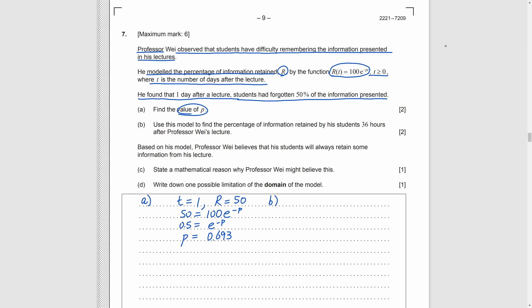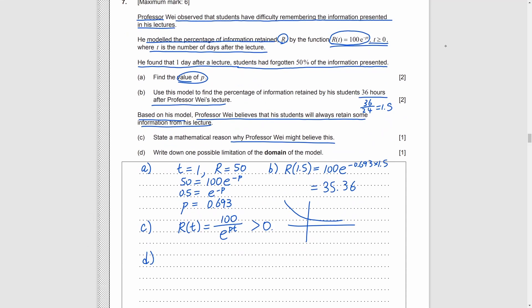Part B, we need to find the information retained after 36 hours. 36 is 1.5 days. So we just put 1.5 into t and calculate r and we get 35.36. Part C, the professor believes that there must be some information left whenever. And we need to explain that. Part D, it is because R(t) is an exponential function. And we need to remember that all the exponential functions are always positive. Part D, we need to write down the limitation of the domain of the model. So, we need to think what value of t is not reasonable. T represents the days after the lecture, which cannot be infinite or very, very large, as we cannot live forever.